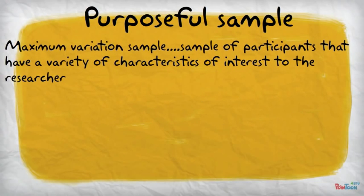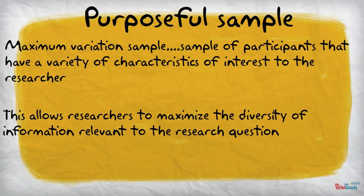A maximum variation sample is a sample of participants that have a variety of characteristics of interest to the researcher. Often, researchers want to understand how a phenomenon is experienced among different people in different times, locations, or settings. Maximum variation sampling allows researchers to maximize the diversity of information in order to answer the research question. For example, if through opportunistic emergent design the homeless people identified formerly homeless people, that gives more variety to the sample of participants.